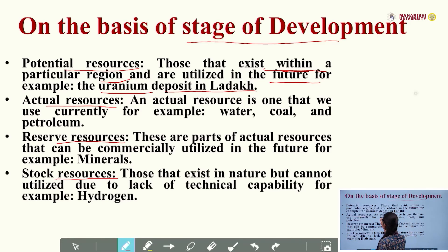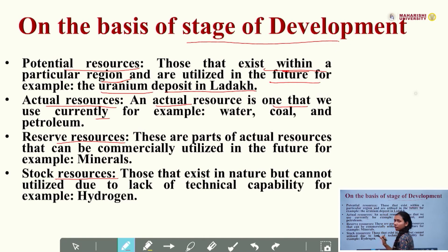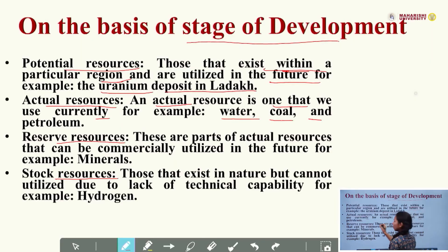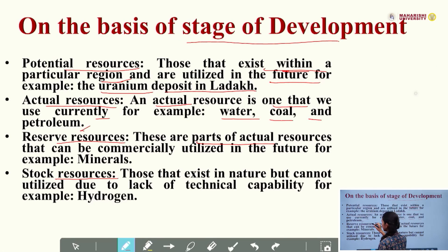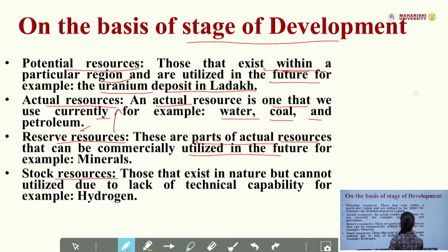Next is actual resource. An actual resource is the one that we currently use — those resources we are using right now. For example, water, coal, and petroleum. Reserve resources are basically parts of actual resources that can be commercially utilized in the future. For example, minerals.